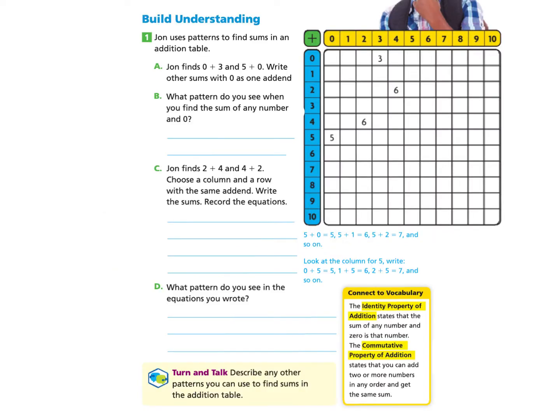Please gather your workbook and a pencil and turn to page 242 under Build Understanding, Part 1. You may pause if needed. John uses patterns to find sums in an addition table. As a quick reminder, an addend plus an addend equals a sum.